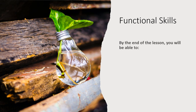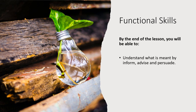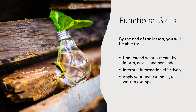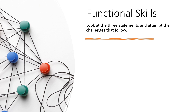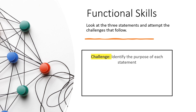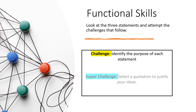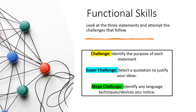So if we recap what we went over last time, what we were thinking about was how to understand what is meant by informing, giving advice and persuading. We're going to interpret information effectively and then apply your understanding to a written example. Look at the three statements and attempt the challenges that follow. You're going to be faced with three different statements and for each one we're going to try and identify the purpose — is it meant to inform, persuade or advise? And then for the super challenge, try and select a quotation to justify your ideas.